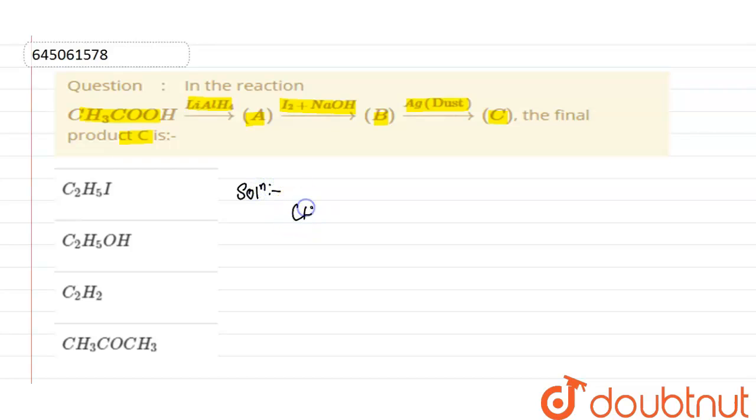So first is acetic acid which is CH3COOH, and it is reacting with LiAlH4. LiAlH4 is a good reducing agent and it will reduce the CH3COOH to CH3CH2OH which is Ethanol. So this is Ethanol and this is the A product.